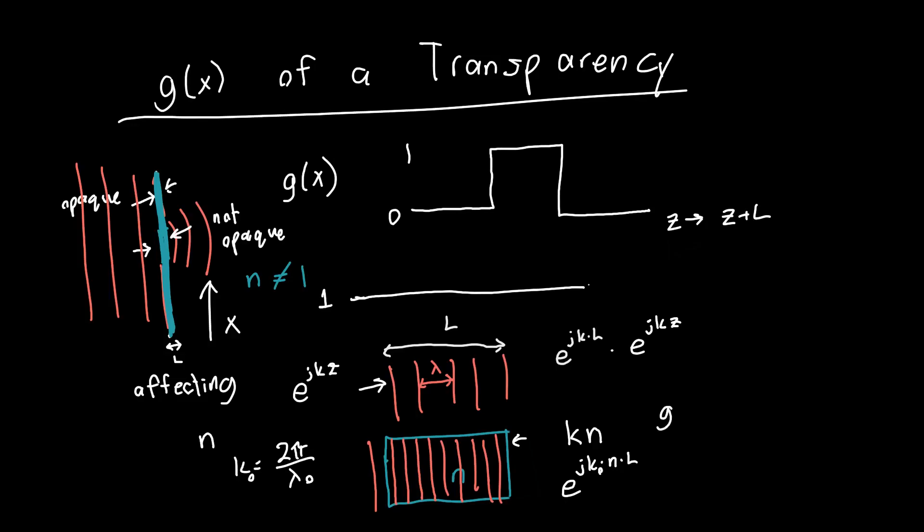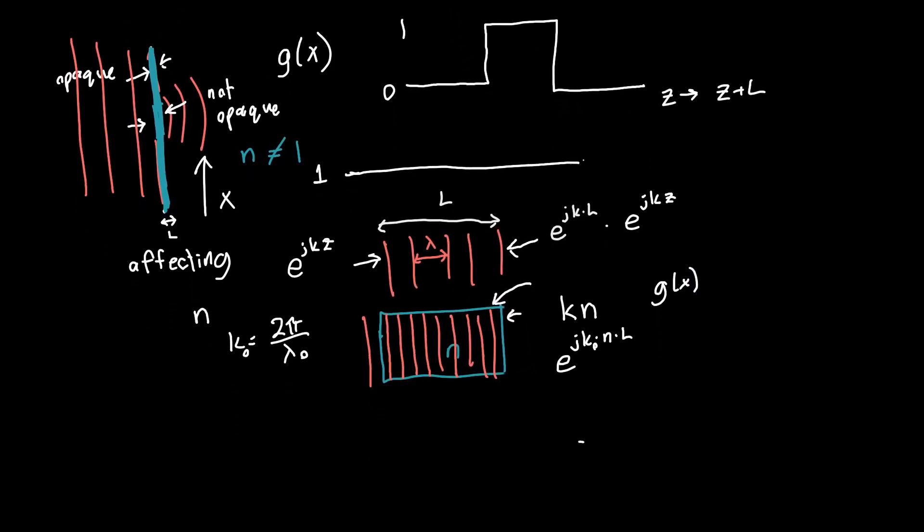And so if we wanted to turn this into an aperture function g, we're essentially trying to figure out what's the difference between a refractive material of distance L and free space of distance L. And in this case, it's just the only difference is that there's a different phase. So we can define the aperture function then as the difference in phase that a plane wave will see, or e to the j k naught times n times L minus k naught L. Or, if you like it in terms of refractive index, e to the j n minus 1 times k naught L.